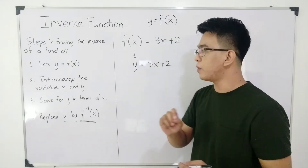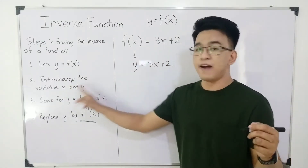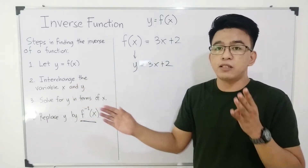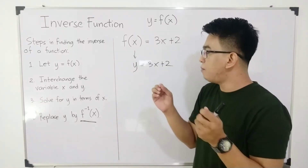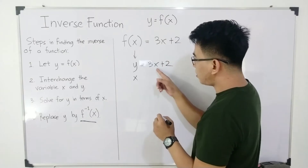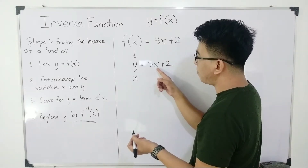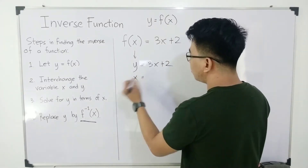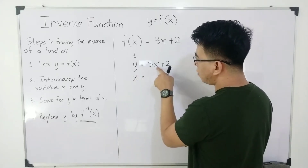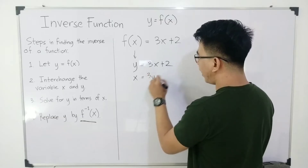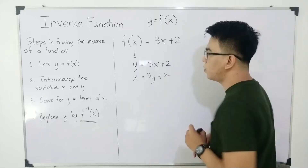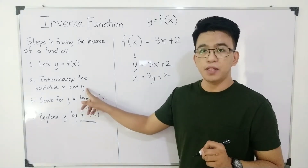Let's proceed with step number two: interchange the variable x and y. You will interchange the position of your variable x and y. If this is your y, it will become x. If this is your x, it will become your variable y. So your new equation is x equals 3y plus 2.